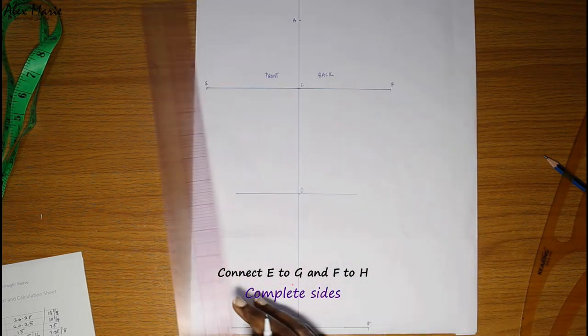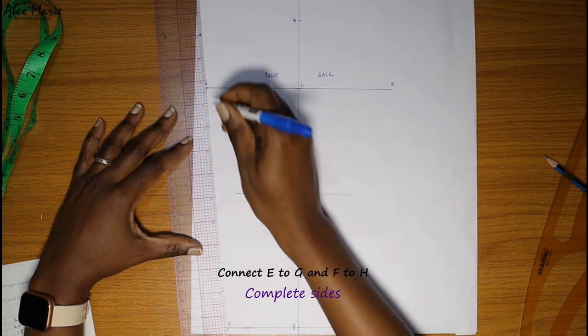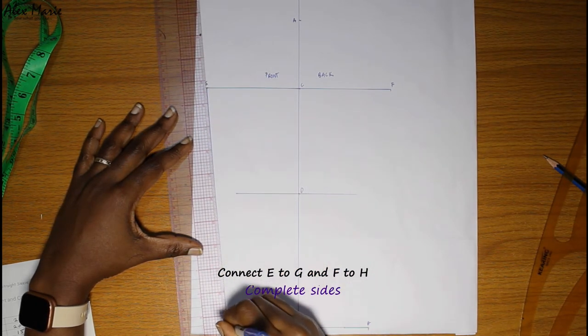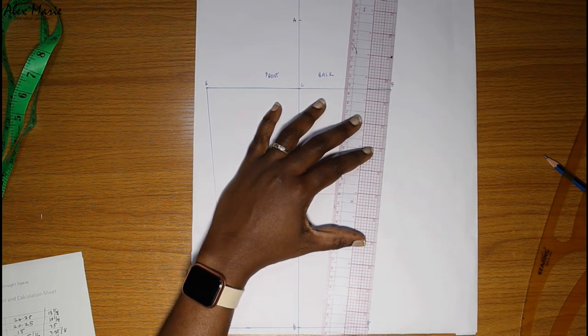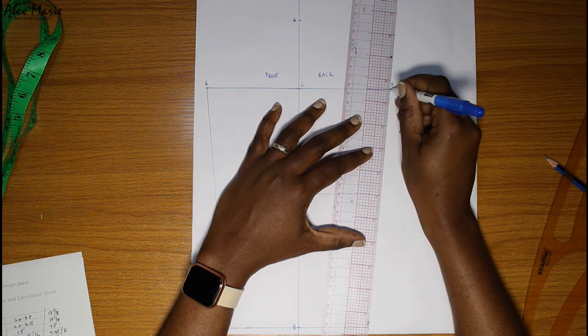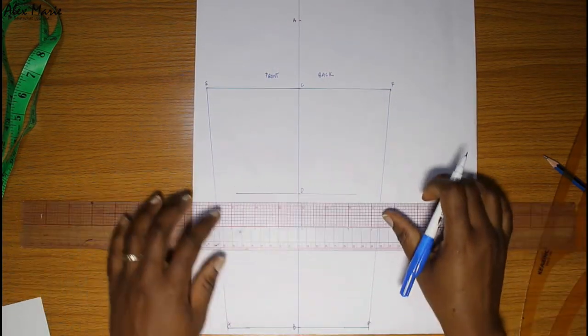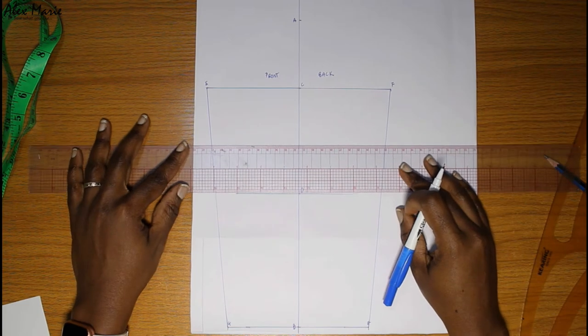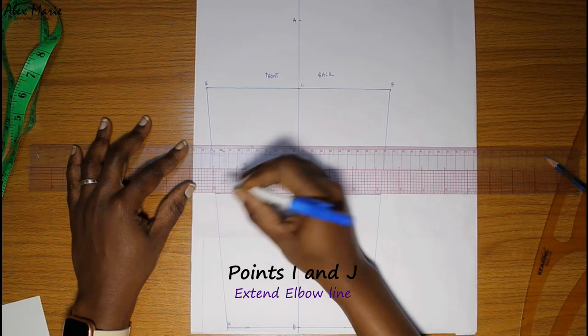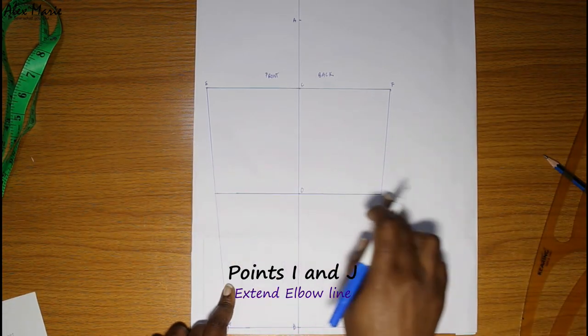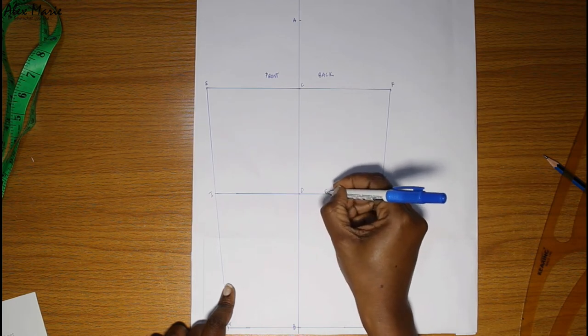Now we're going to connect, and this completes our sides. Extend that elbow line to the edge. We'll just call these points I and J. So this is our elbow.